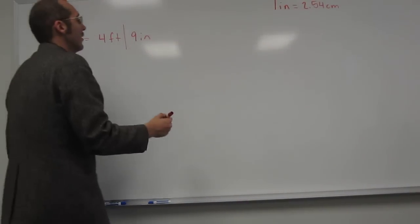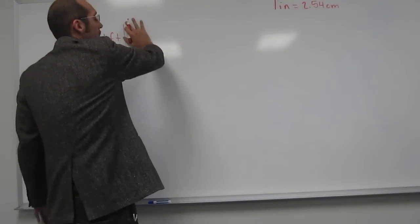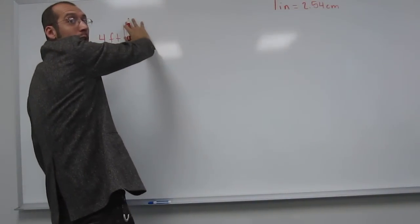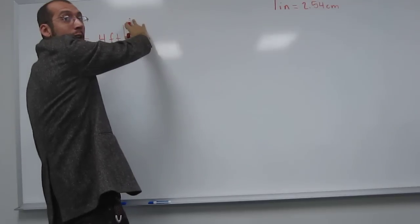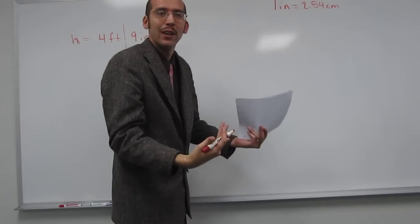Okay, well, 9 inches is easier, so let's do that part first. So once we figure out what 9 inches is, then we've knocked off 9 inches of your height. And then all of this is 4 feet. And then we add those two together.